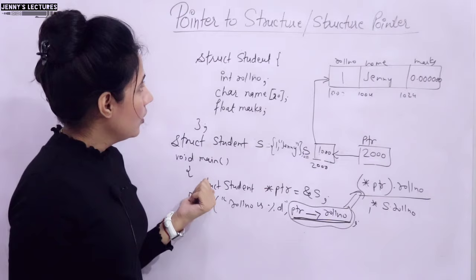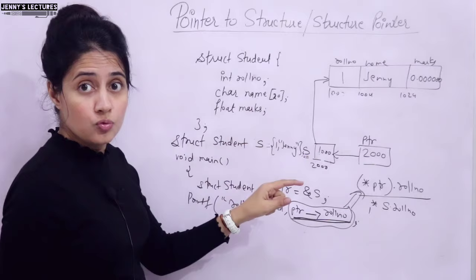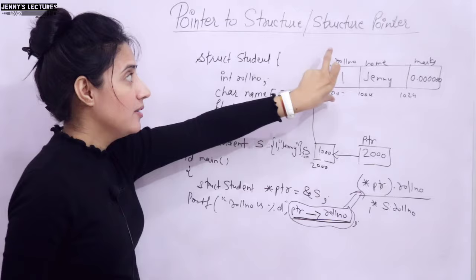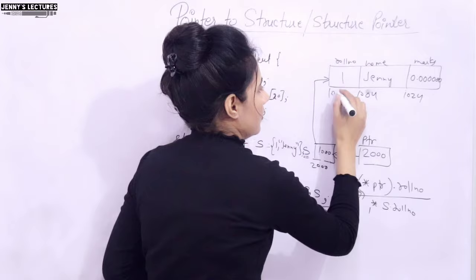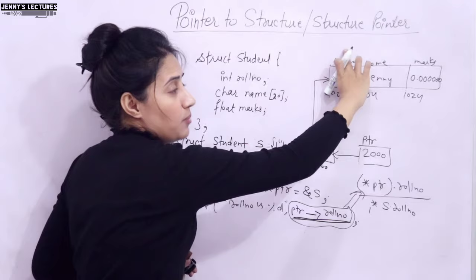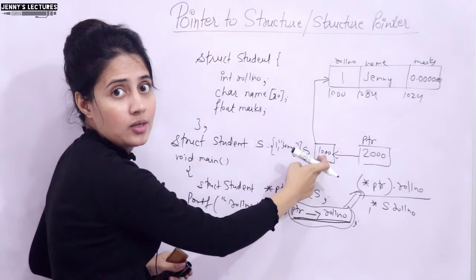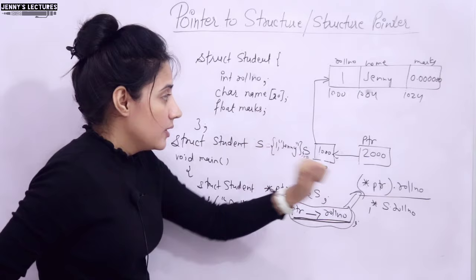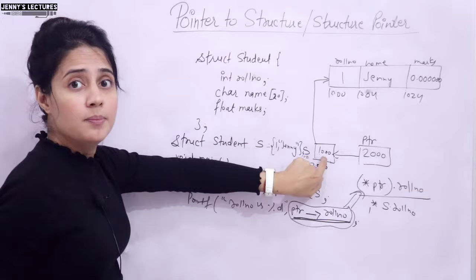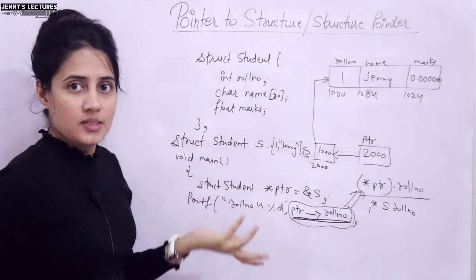So what is a structure pointer? It's a pointer which points to the address of the memory block that stores the structure. The pointer is pointing to address 1000, which is the base address of the memory block. By default, the name of the variable 's' stores this base address. That is the definition of a structure pointer.